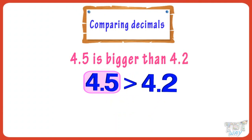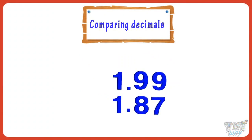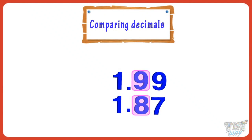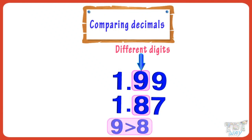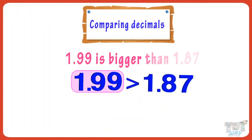Now, let's take another example. Let's compare 1.99 and 1.87. We have to start at the left and look for the first place where the digits are different. Here, the digits at the tenths place are different. So, comparing nine and eight, we get 1.99 is more than 1.87.